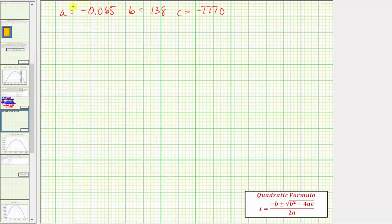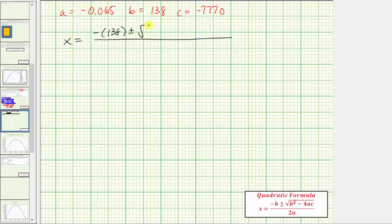Let's do this on the next slide. We'll have x equals, in the numerator we have negative b, that would be negative 138, plus or minus the square root of b squared, that would be 138 squared, minus four times a, which is negative 0.065, times c, which is negative 7,770. All this is divided by two times a, which is two times negative 0.065. Now let's go to the calculator and determine our two solutions. We'll have two solutions because of the plus or minus here.